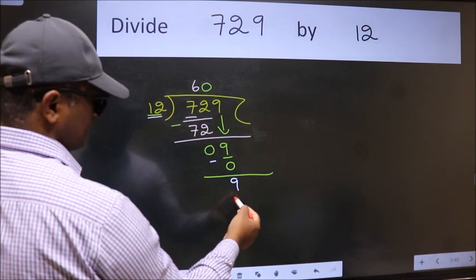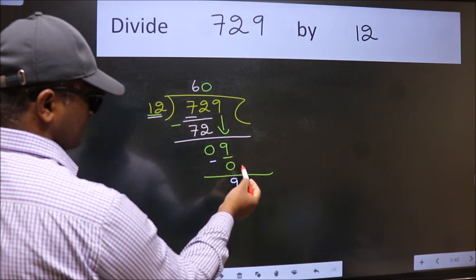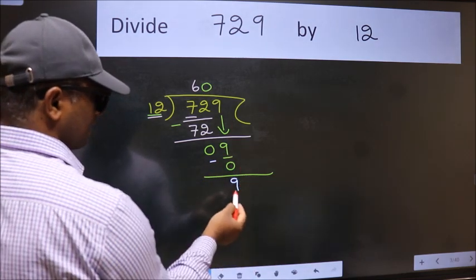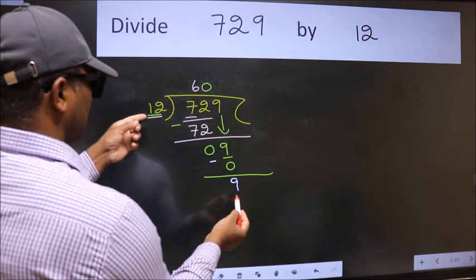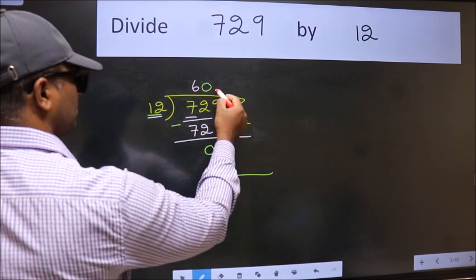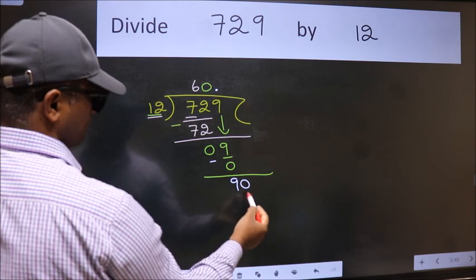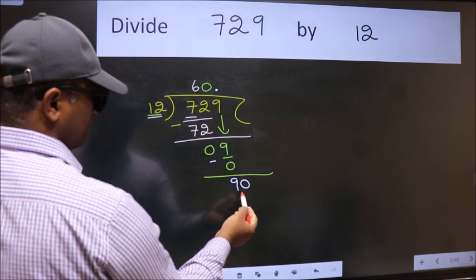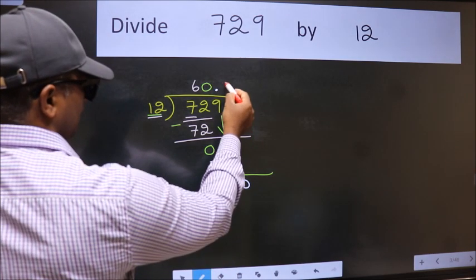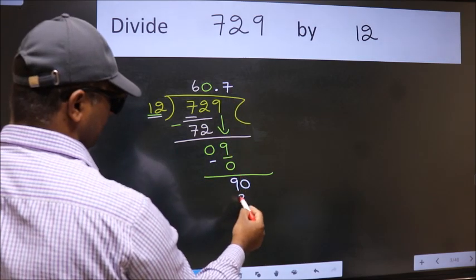Over here we did not bring any number down. And 9 is smaller than 12. So now we can put dot and take 0. So 90. A number close to 90 in 12 table is 12 times 7, 84.